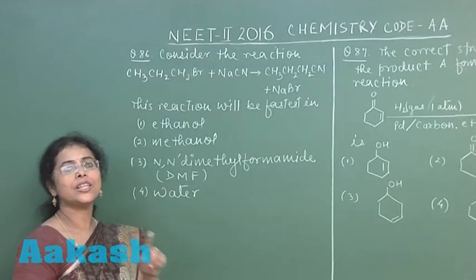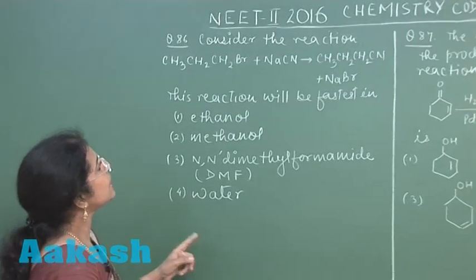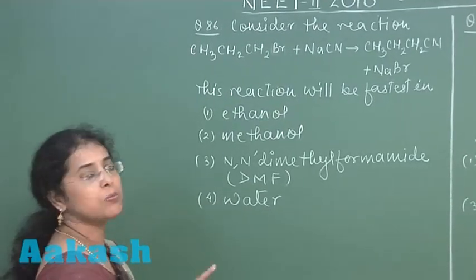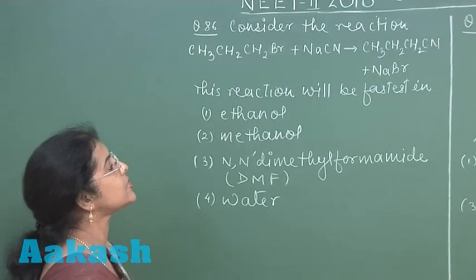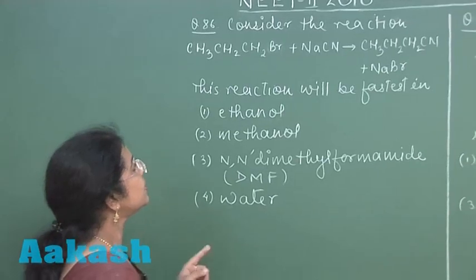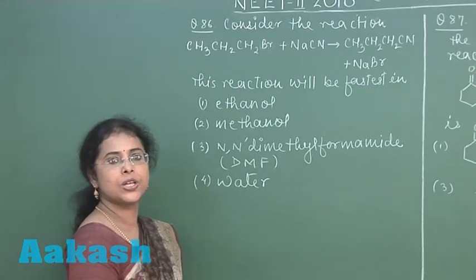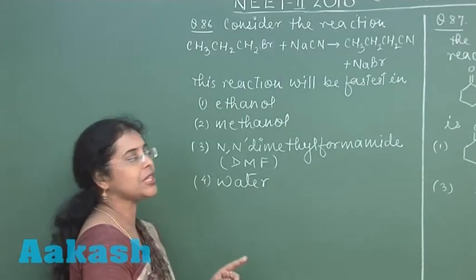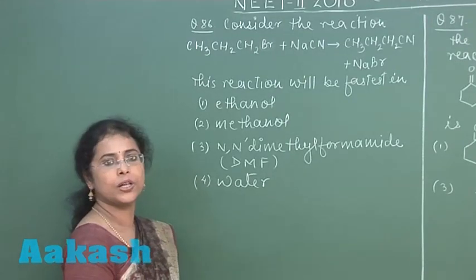So, moving to the next question, that is question number 86. Consider the reaction CH3CH2CH2Br plus NaCN produces CH3CH2CH2CN plus NaBr. This reaction will be fastest in ethanol, methanol, N,N-dimethylformamide, and fourth is water.